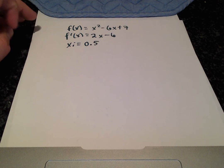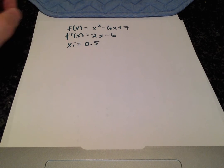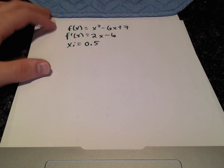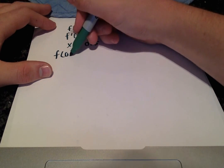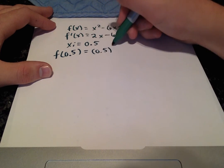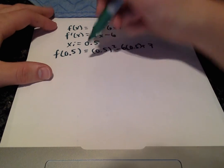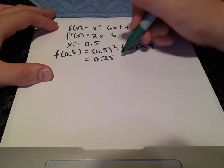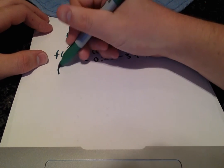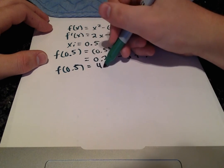All right, so what I like to do beforehand is calculate the function and the derivative at our x value before we actually plug them into the formula that we need to do that. f of 0.5 equals 0.5 squared minus 6 times 0.5 plus 7, which is 0.25 minus 3 plus 7. f of 0.5 equals 4.25.